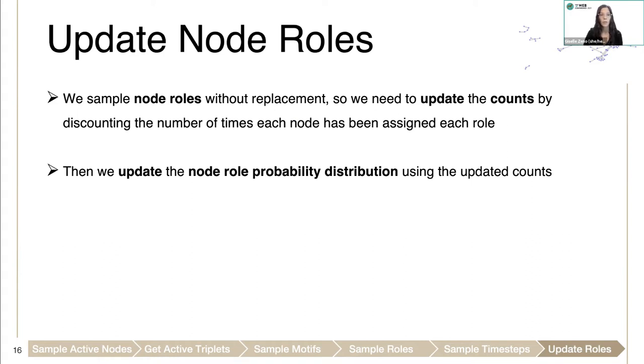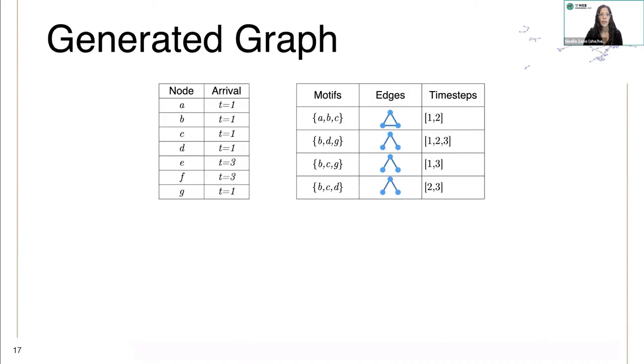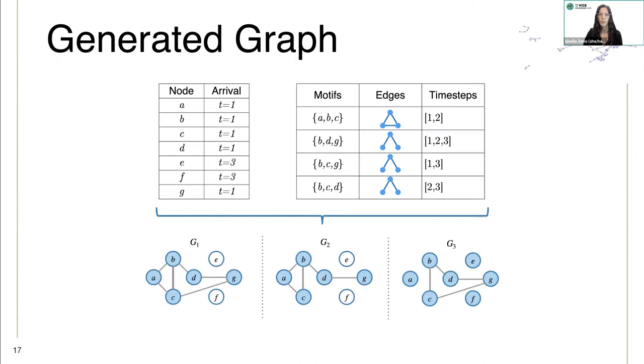We sample the node rules without replacement, so we need to update the counts by discounting the number of times each node has been assigned each role. Then we update the node rule probability distribution using the updated counts. Lastly, we can output the generated graph using the node arrival times, the motif edges, and the time steps that the motifs appear in.